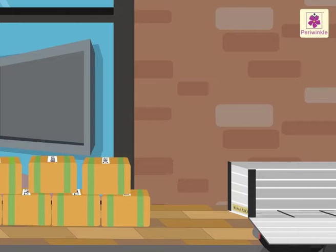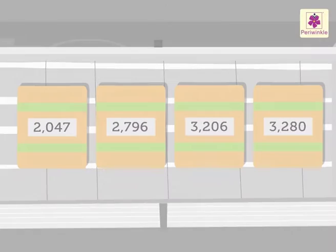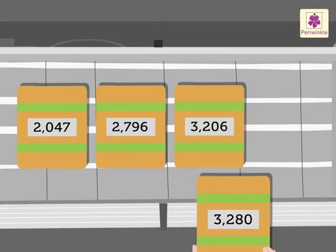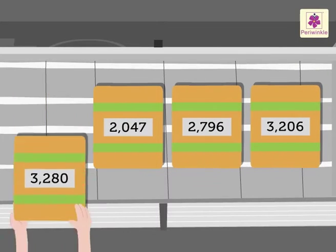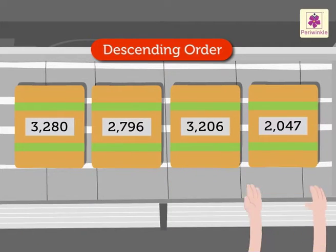Now let us revise descending order. When we arrange numbers from the greatest to the smallest, we say they are in the descending order. So these boxes will be arranged in the descending order.